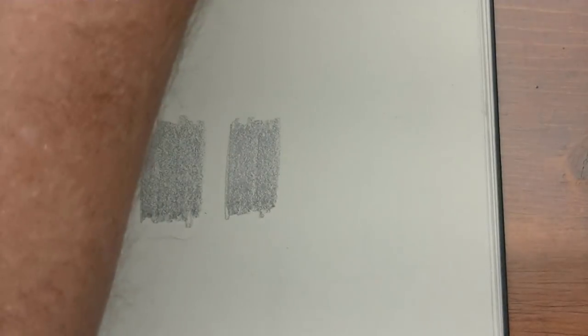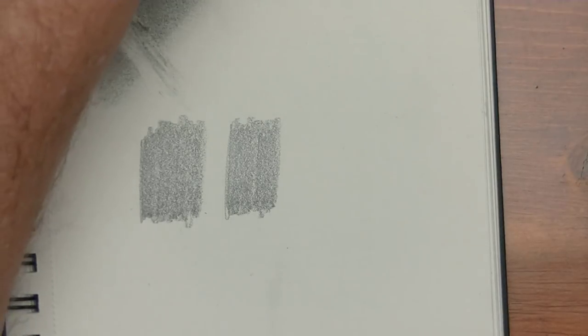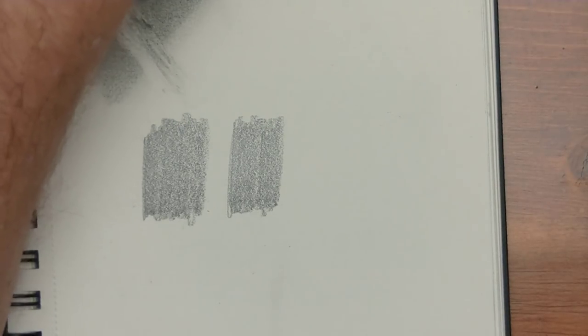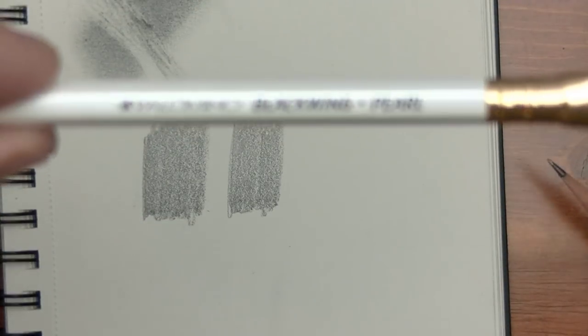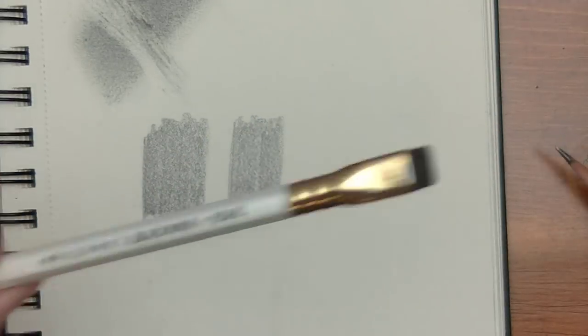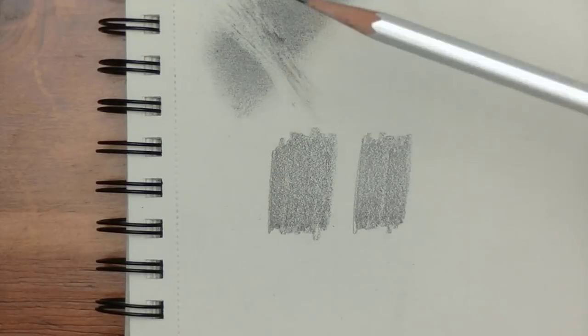And just to make sure, why don't we put it up against the Blackwing Pearl, which is actually darker than the 602. And so we should see a difference, right? Well, let's find out.